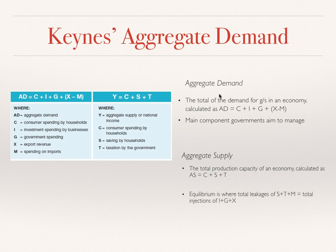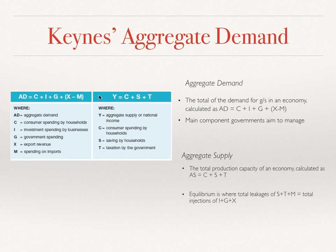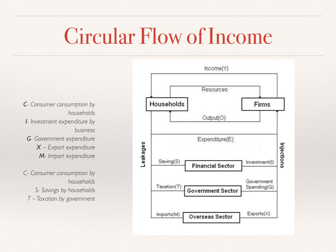This is where they fit into the circular flow of income. Aggregate demand is the total demand for goods and services in an economy, and these are the main components that the government is aiming to manage. For example, they might try to increase consumer spending, investment spending, or government spending, and these will be injections into the economy.